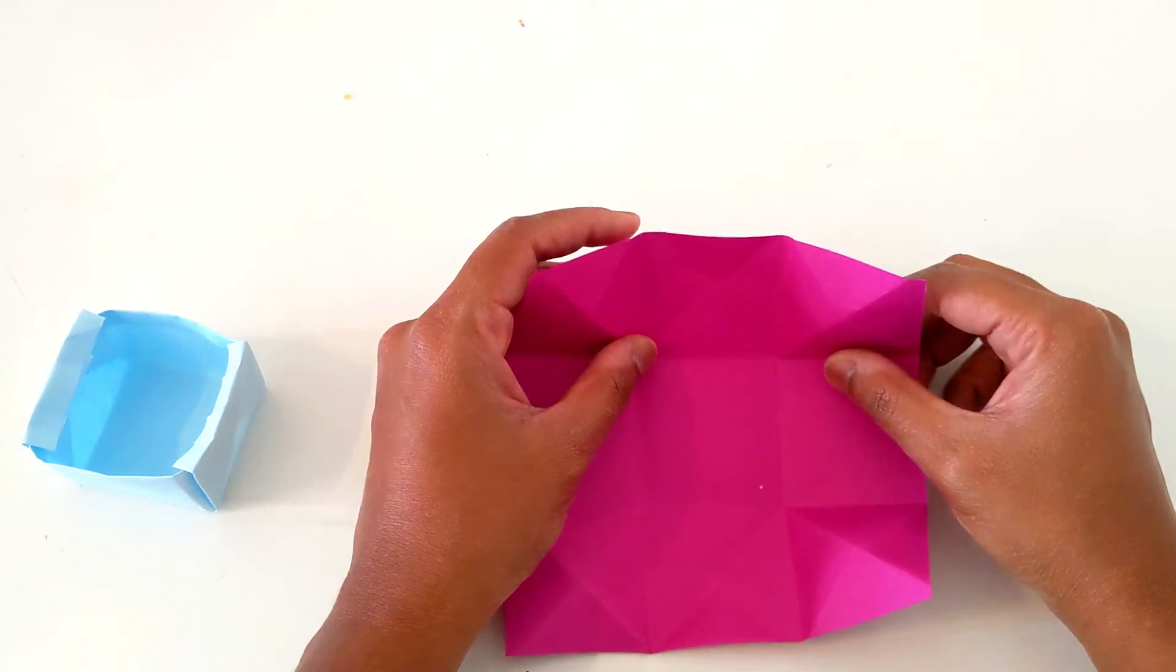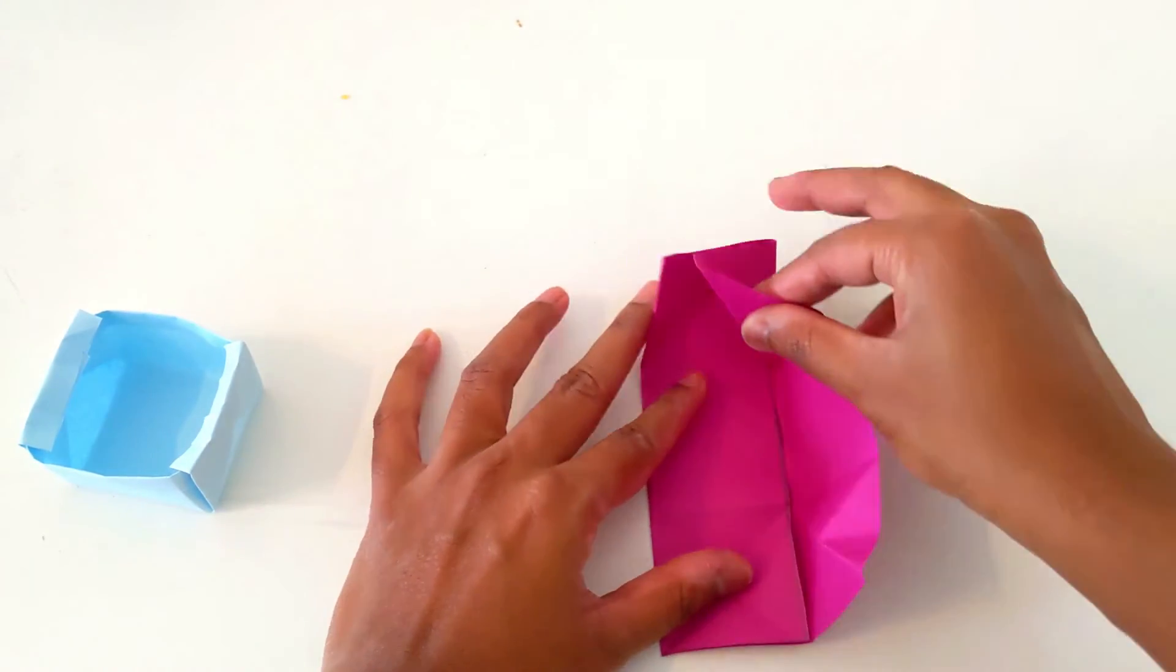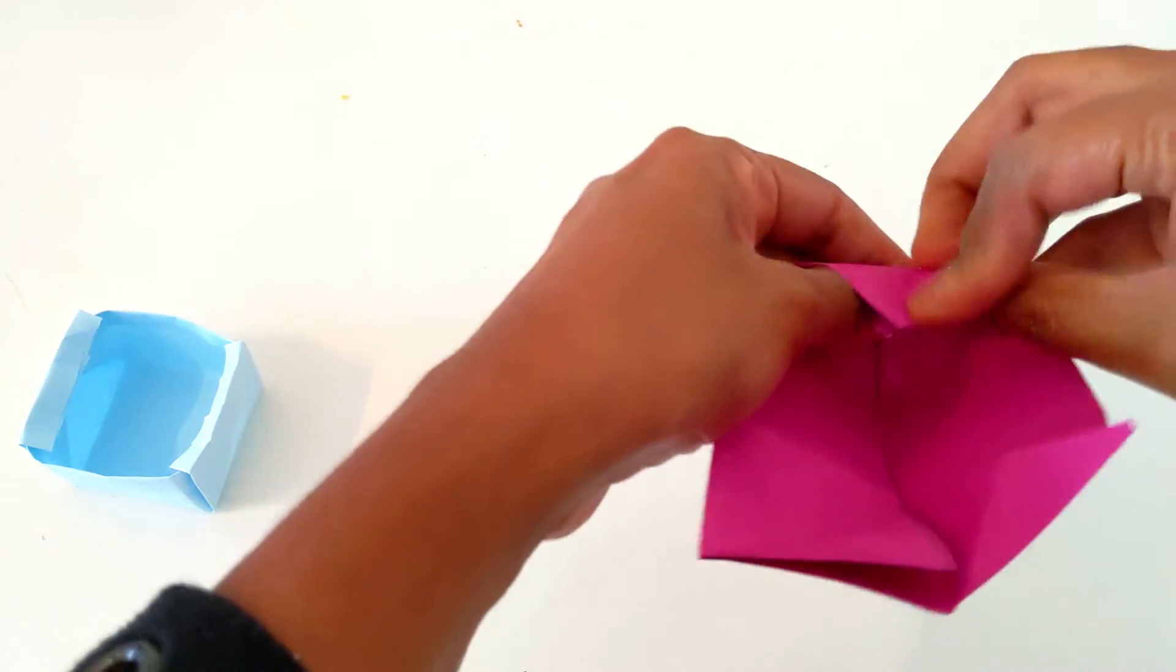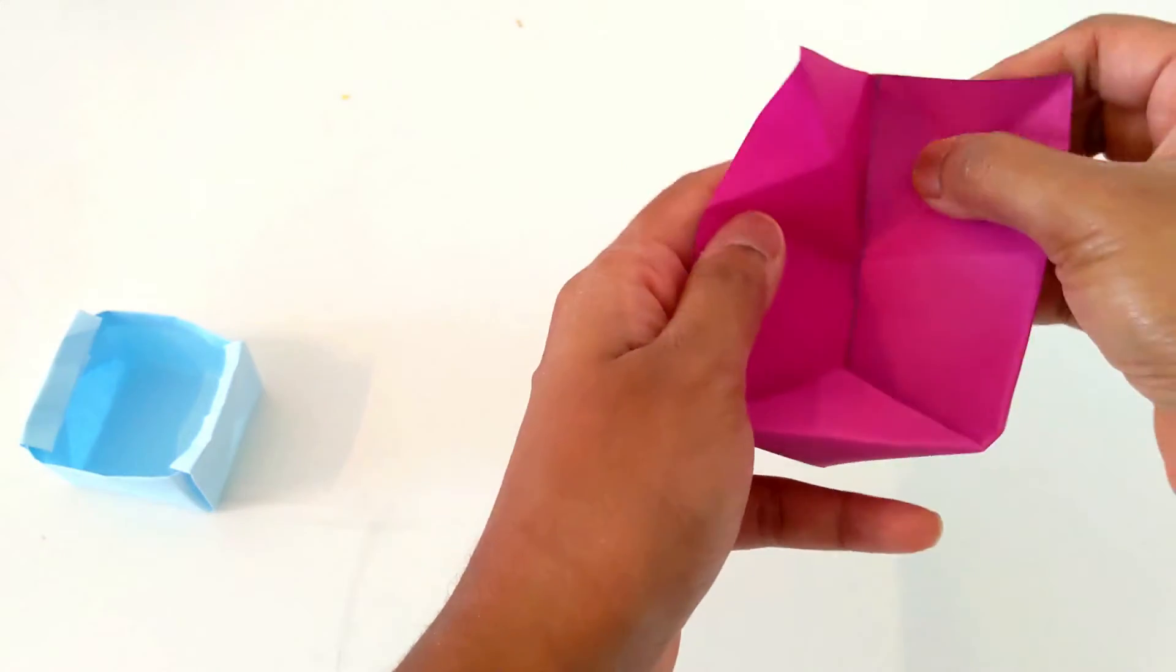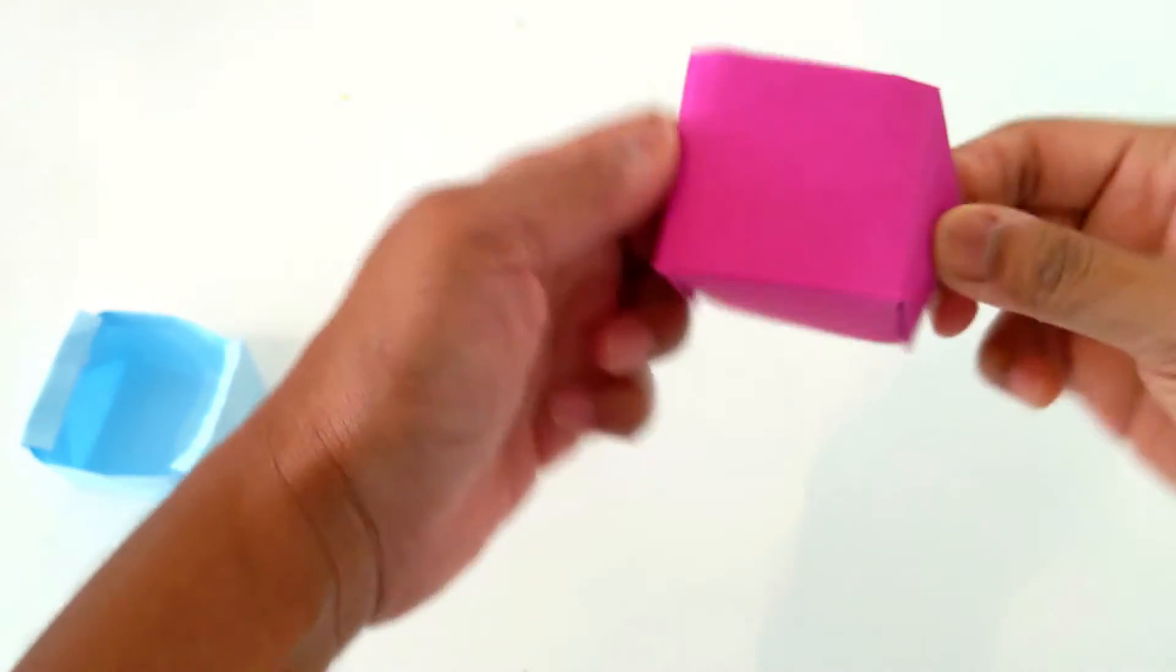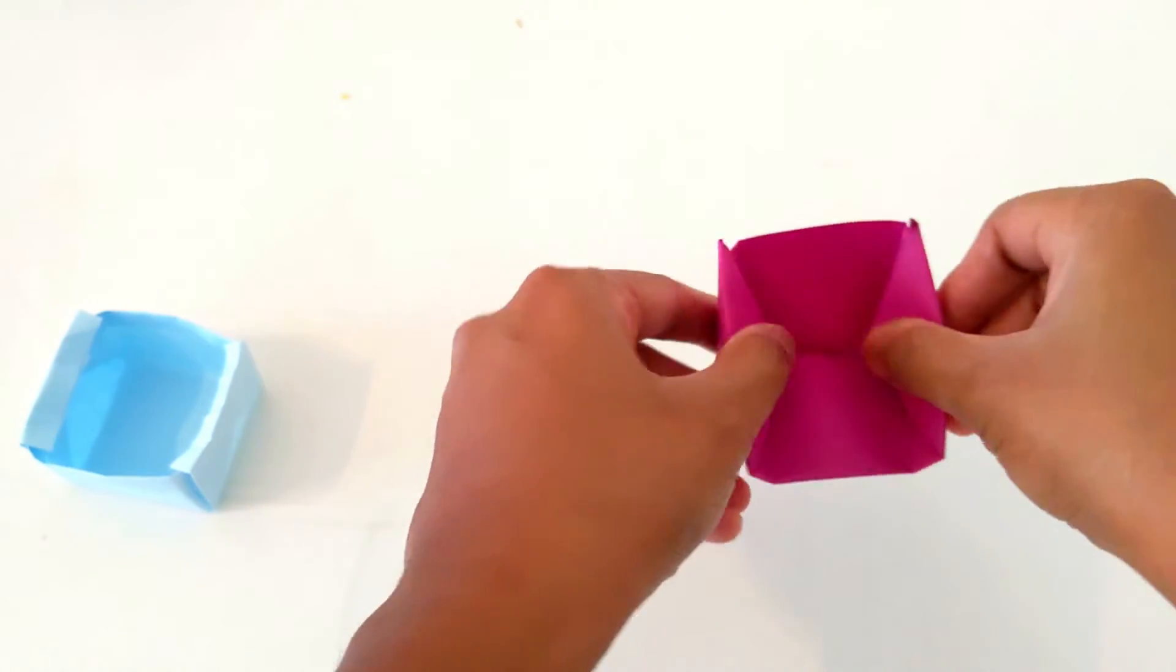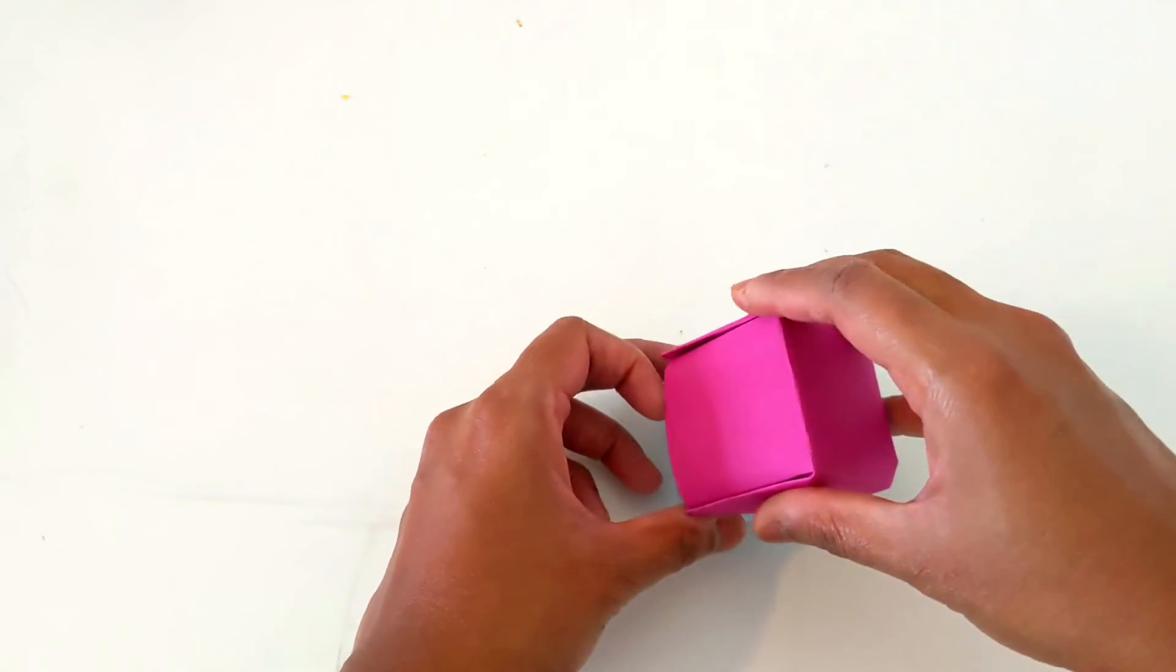Now open the paper and here see, one side we need to fold and now fold it inside so that the triangle shape comes. You need to see the step - for the box I have opened the full paper, but for this I have opened only one side so that we can make a triangle shape. So the roof is ready.